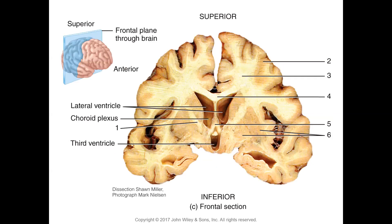This is a dissected brain frontal section. Number one shows the internal capsule — your projection fibers. Number two is gray matter, number three is white matter, number four is the corpus callosum — the commissural fibers. Number five is the fornix — association fibers that arc and return into the same hemisphere rather than crossing over. Number six shows the basal nuclei, your deep gray matter.